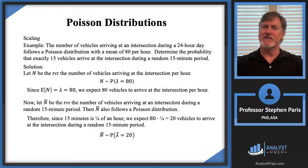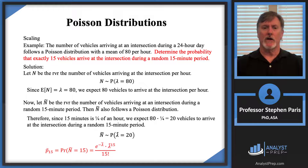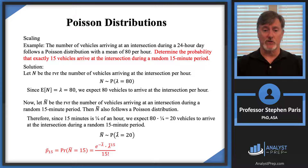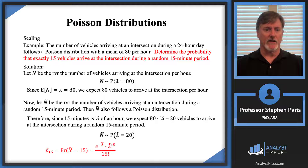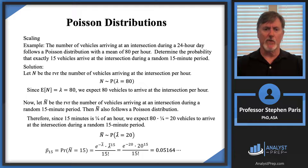The probability that exactly 15 vehicles arrive during that 15-minute period is P(Ñ = 15) = e^(−20)·20^15 / 15!. When I did that calculation, I got just over 5% for that probability.